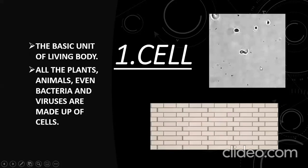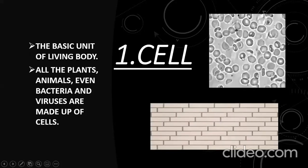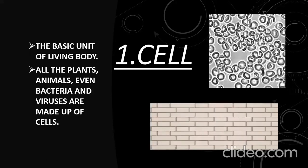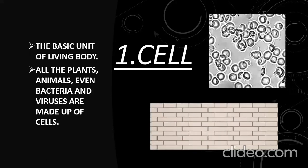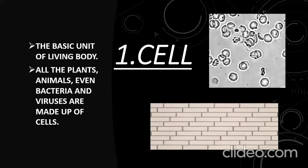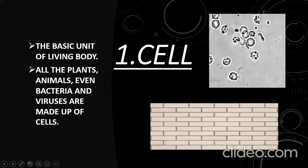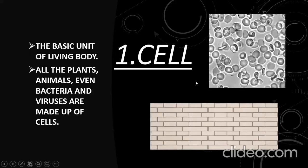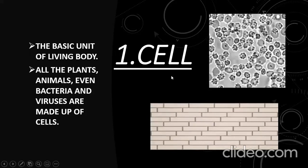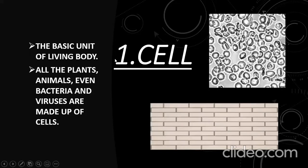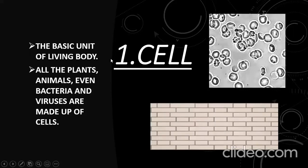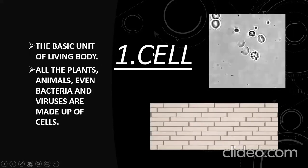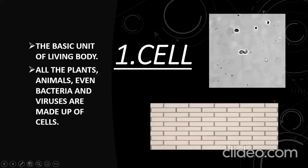This is how a cell looks like. There are different kinds of cells — all cells have different shapes, their sizes are different, but we are not supposed to discuss them here. So we know that the first feature was they are made up of cells. What is the cell? We came to know here.